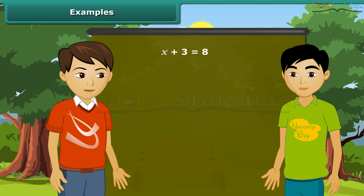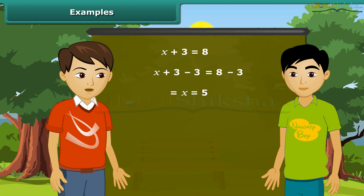Let us take an equation: X + 3 = 8. We shall subtract 3 from both sides. The new LHS is X + 3 − 3, which equals X. The new RHS is 8 − 3, which equals 5. Therefore we get X = 5. But why subtract 3 and not some other number? It is because subtracting 3 reduces the LHS to X.